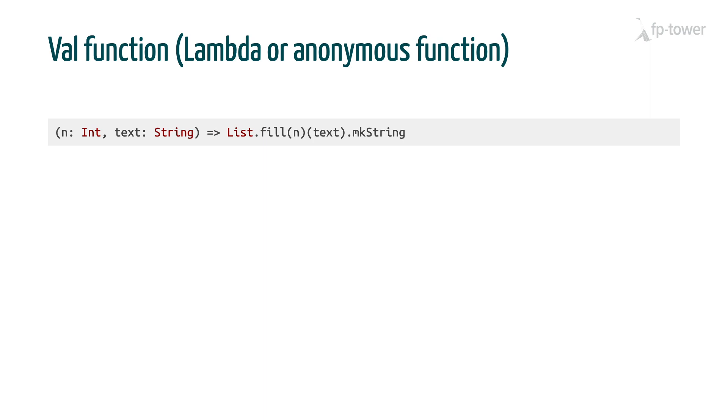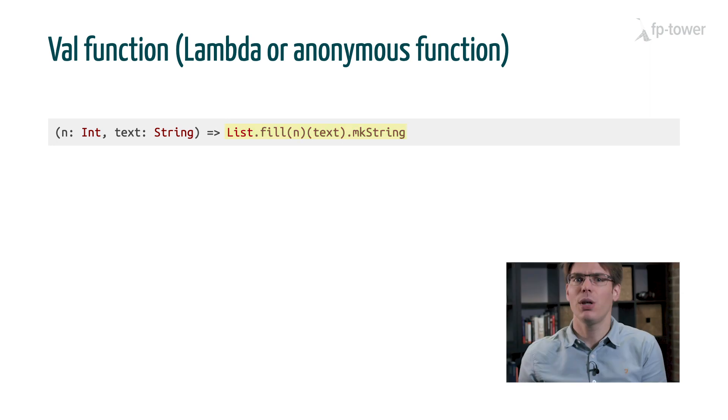Here we define a val function by first writing the expected inputs between parentheses. Then we have an arrow. And finally, the body of the function. So here we can see why val functions are also called lambdas or anonymous functions. Because the object we created doesn't have a name. It's just an anonymous object.